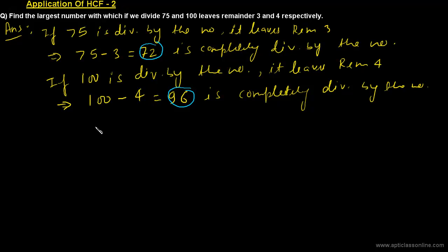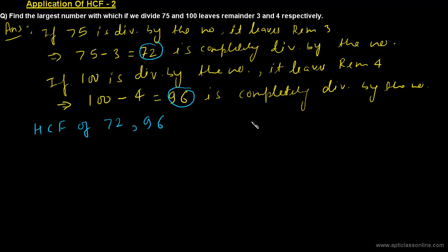A number which completely divides 72 and 96 is nothing but the highest common factor of 72 and 96, because the HCF of 72 and 96 will be the largest number that completely divides both 72 and 96. So here we are trying to find out the HCF of 72 and 96.